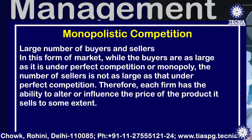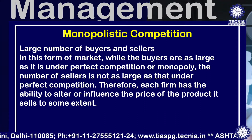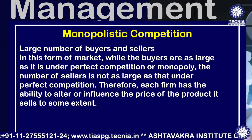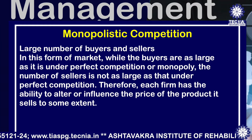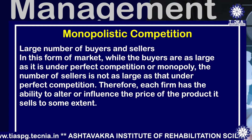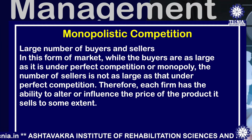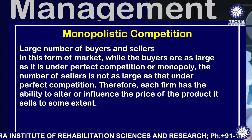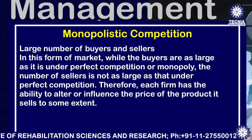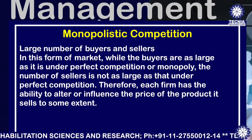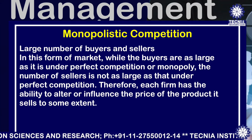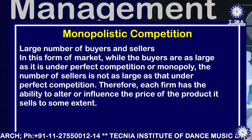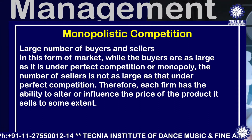The features of this market are: first, large number of buyers and sellers. In this form of market, while the buyers are as large as under perfect competition or monopoly, the number of sellers is not as large as in perfect competition. Therefore, each firm has the ability to alter or influence the price of the product it sells to some extent. If the demand is high, the firm can charge a higher price than its competitor, or if the demand is less, it can charge a lesser price than its competitors.